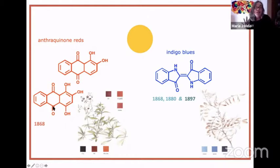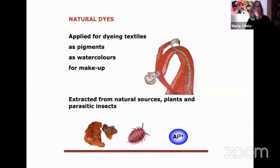The reds found in pre-Columbian textiles were extracted from plants. These natural dyes were applied to textiles of course, but also as pigments in manuscripts, in paintings, as watercolors, and also as makeups. So extracted from natural sources - from plants, from parasitic insects such as the cochineal and the cariolaca.